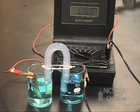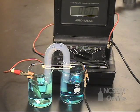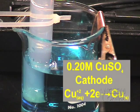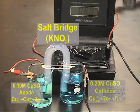We have two copper half cells here consisting of a copper metal electrode and a copper sulfate solution. The solution on the right is 0.2 molar. The solution on the left is 0.1 molar. We have a salt bridge containing potassium nitrate that connects the two half cells.